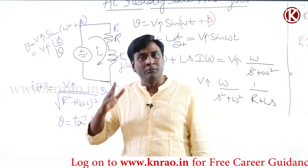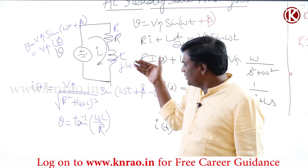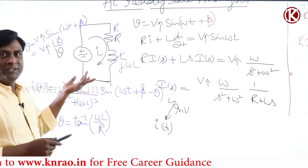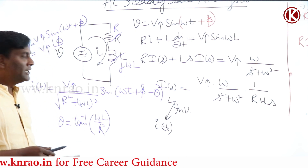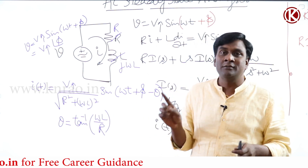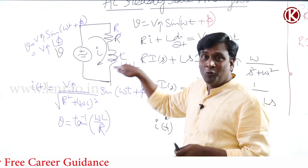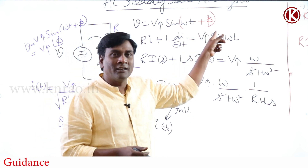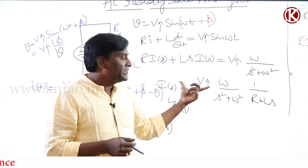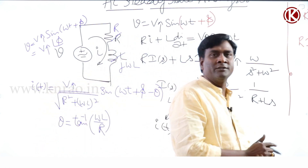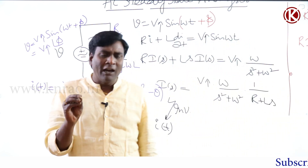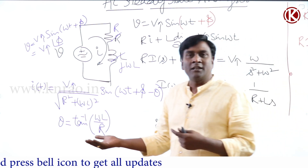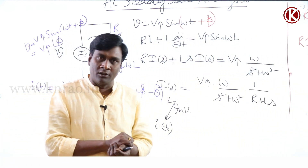When going from time domain to phasor domain, you need not do such lengthy calculations. Even if the frequency changes to 3ω, everything follows the same simple procedure. For circuits with a capacitor, you'd have a second-order differential equation — imagine how difficult that would be. Phasors simplify our mathematical analysis enormously. In this session, we will now start analyzing how to represent the phasor diagram.